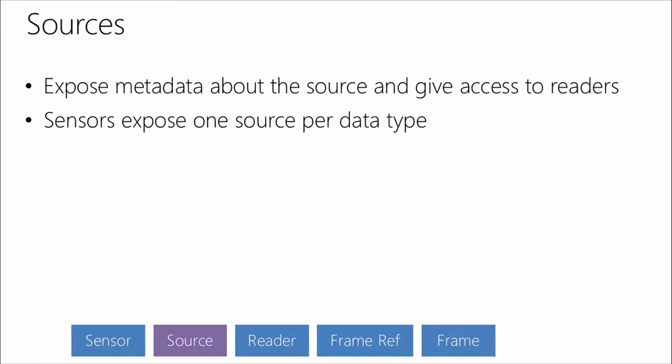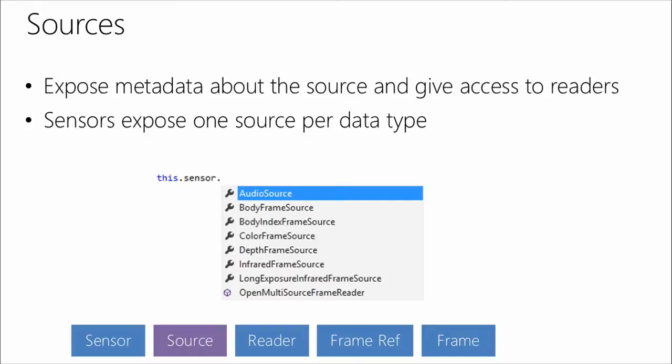The sources are obtained from the KinectSensor. They expose metadata about each source and give you access to readers. The sensor exposes one source per data type: audio, body frame, body index, color, depth, infrared, and long exposure infrared. These concepts will be familiar to V1 users who knew them as streams — we now call them sources, following Windows design guidelines, since they weren't streams in the Windows sense of the word.